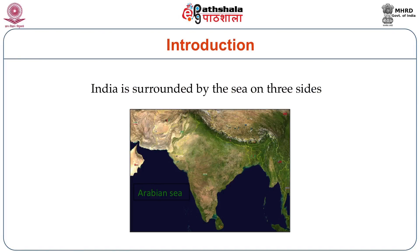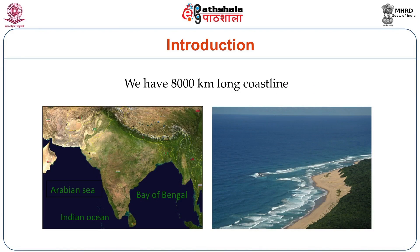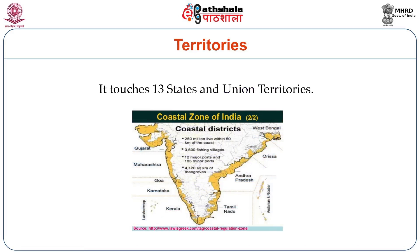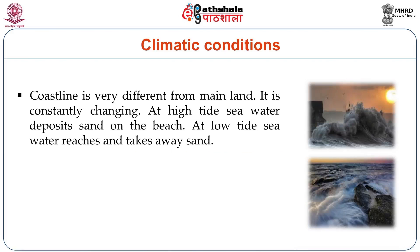India is surrounded by sea on all three sides. We have about 8,000 kilometers of coastline. This includes the East Coast, the West Coast, and also includes islands in Lakshadweep and Andaman Nicobar. It touches 13 states and Union territories. Coast is the interface between sea and the land. Coastline differs in many ways from the mainland. It is constantly changing. At the high tide,